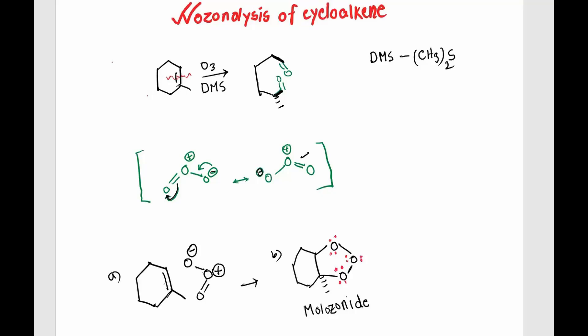In this video I'm going to talk about ozonolysis of cycloalkene. Here we have our alkene, and that reacts with our ozone molecule to form two double bonds between carbon and oxygen atoms in the presence of our solvent dimethyl sulfide. The formula of dimethyl sulfide is shown here.